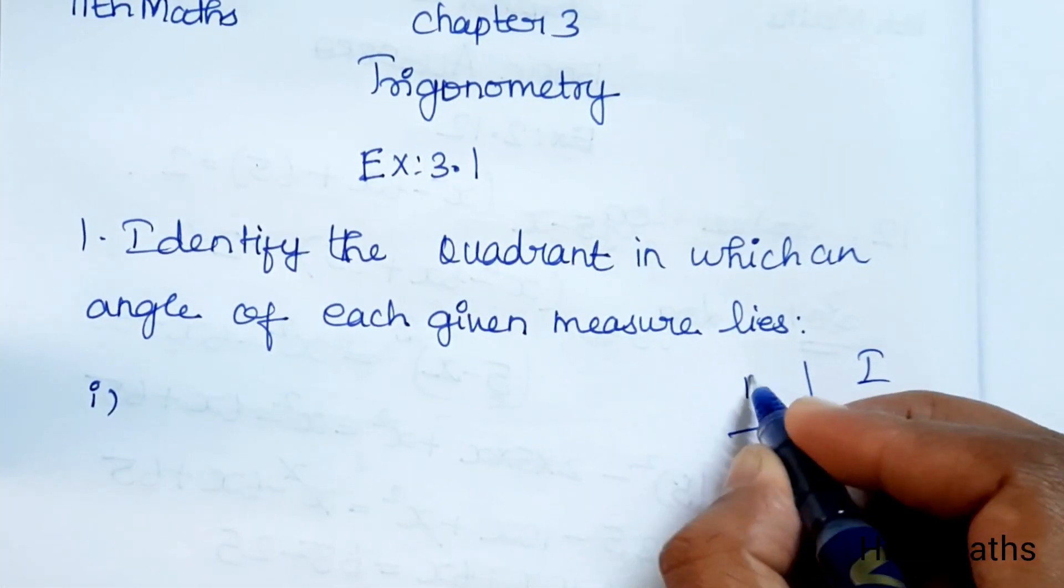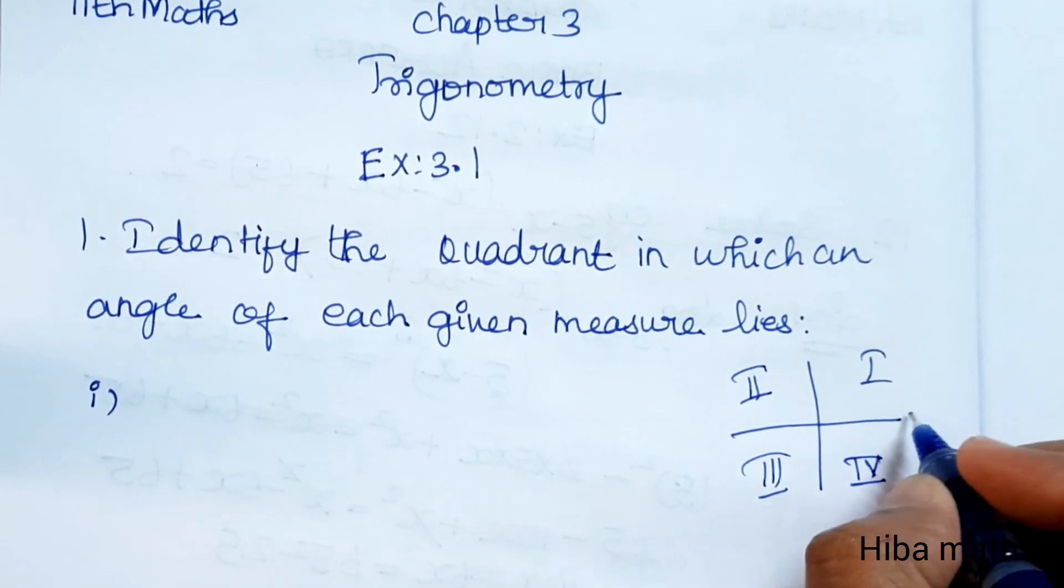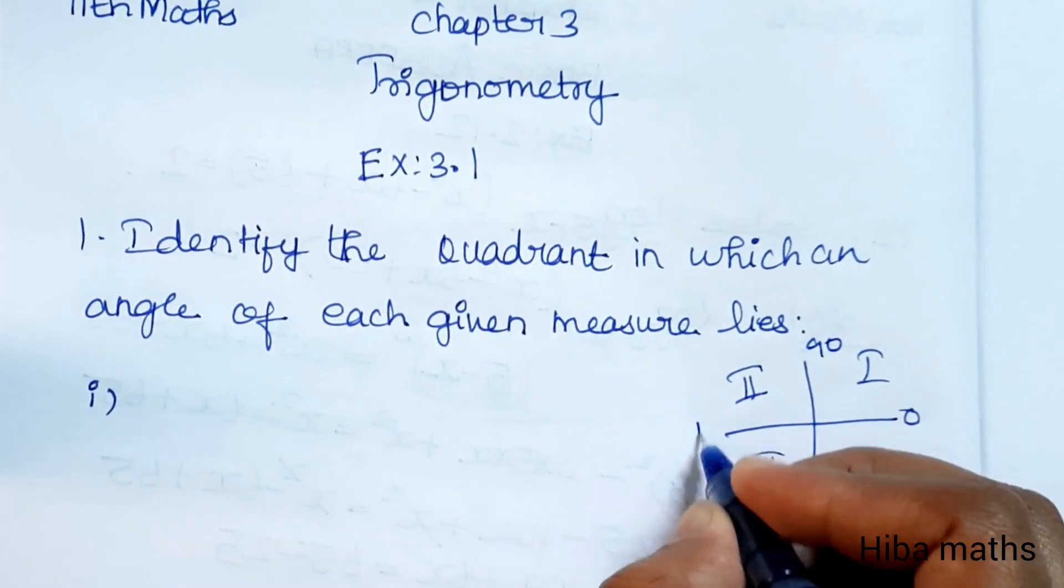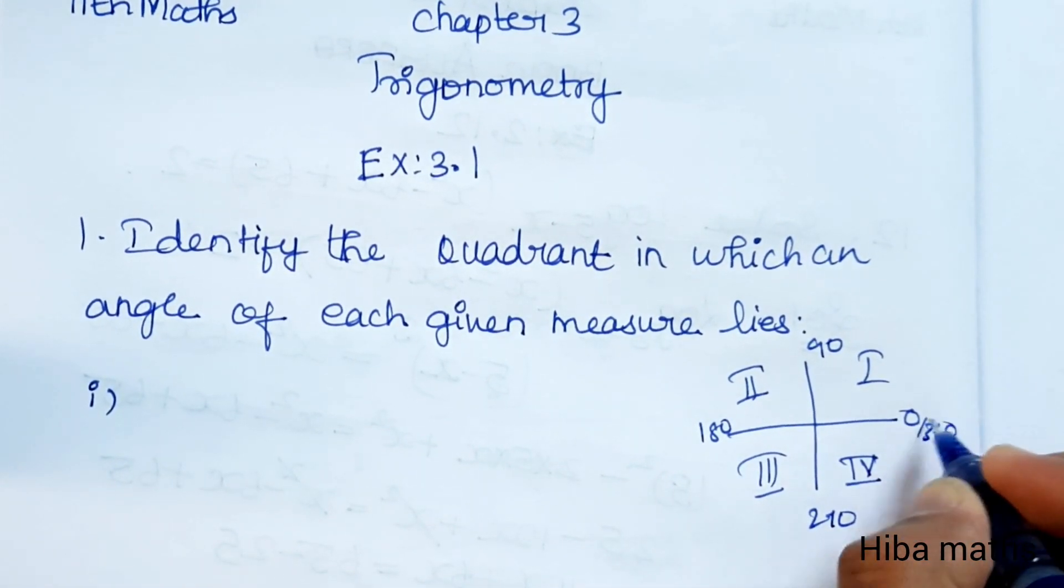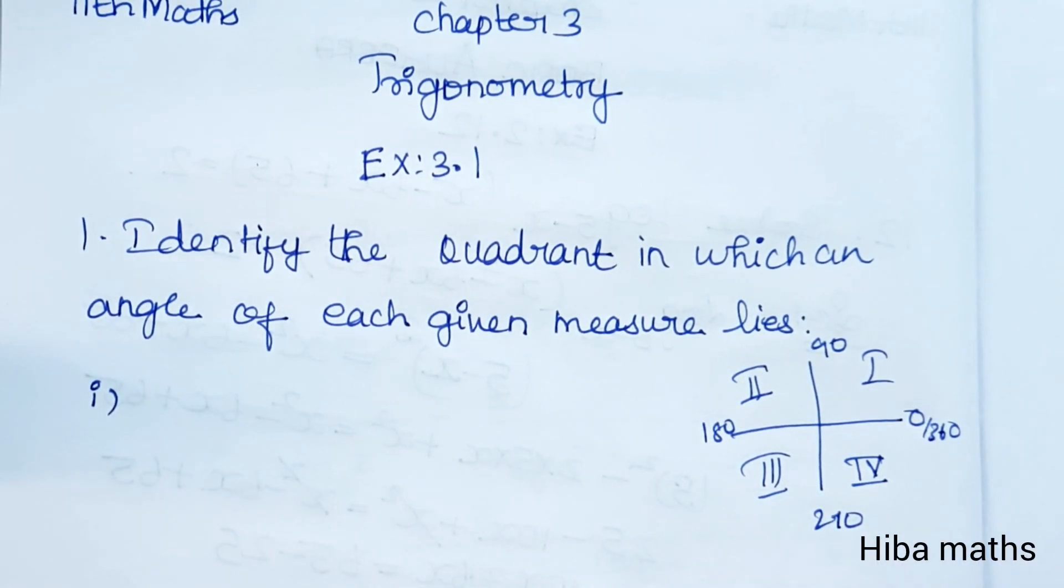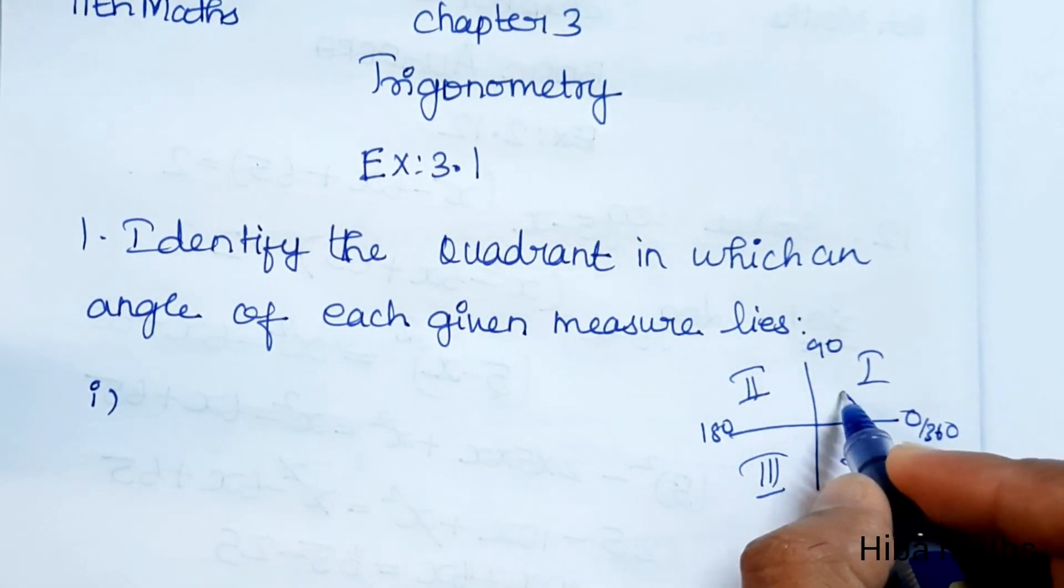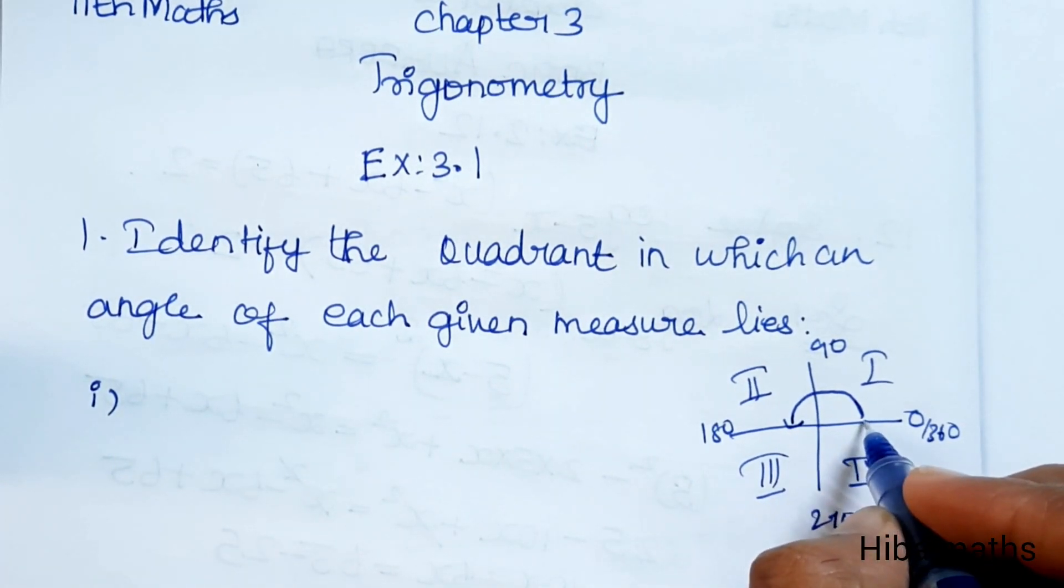First quadrant, second quadrant, third quadrant, fourth quadrant. The angles are 0°, 90°, 180°, 270°, 360°. This is the basic thing we need to know. If the angle is positive, we measure anti-clockwise. If the angle is negative, we measure clockwise.